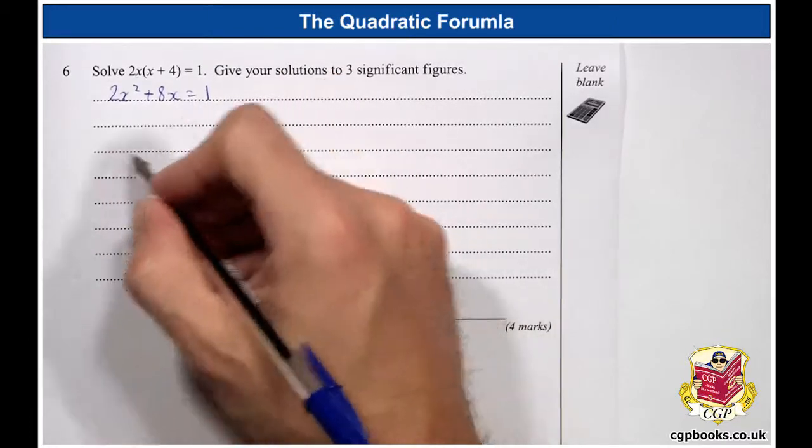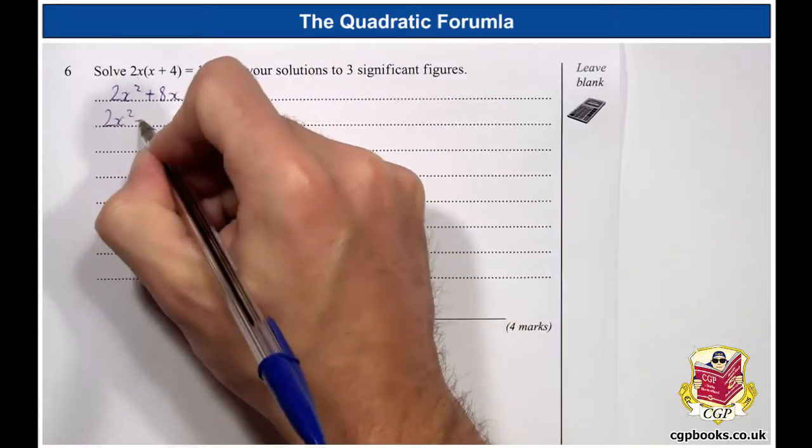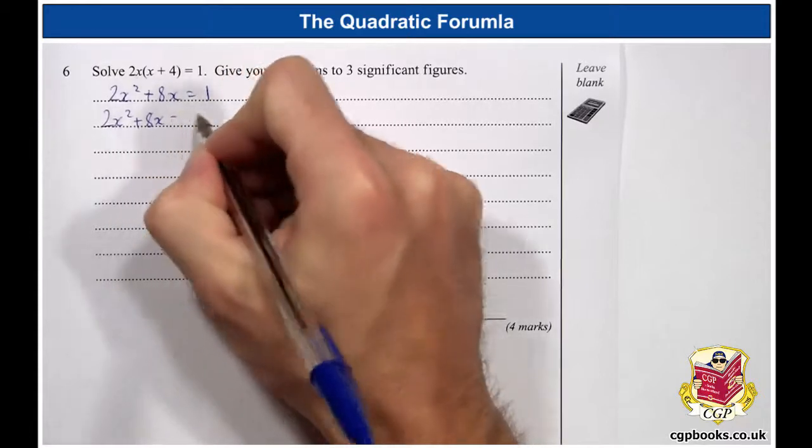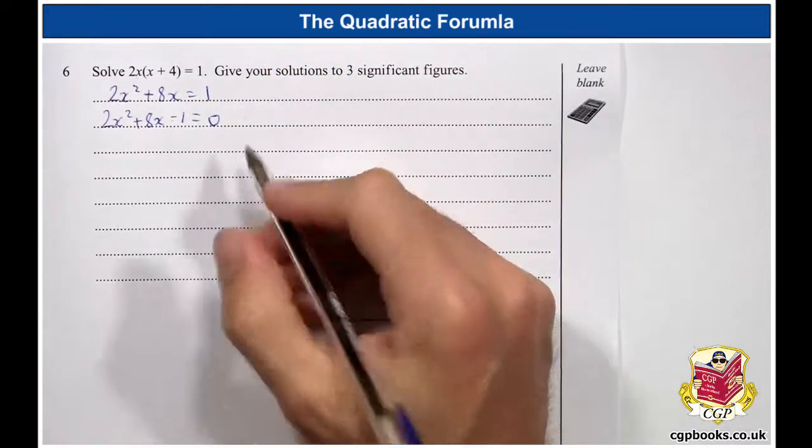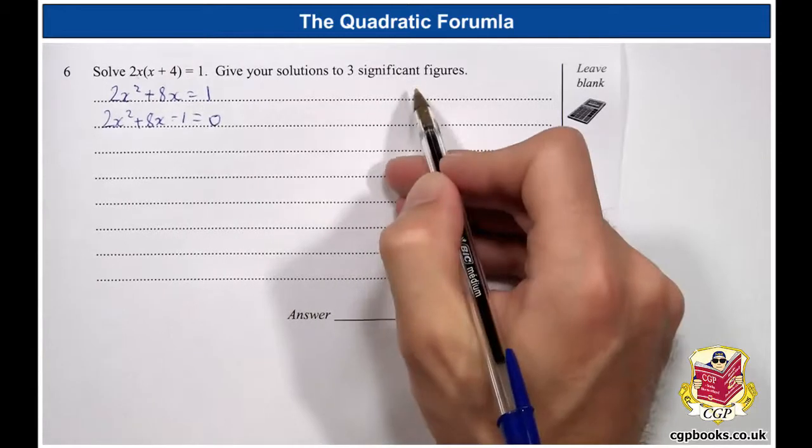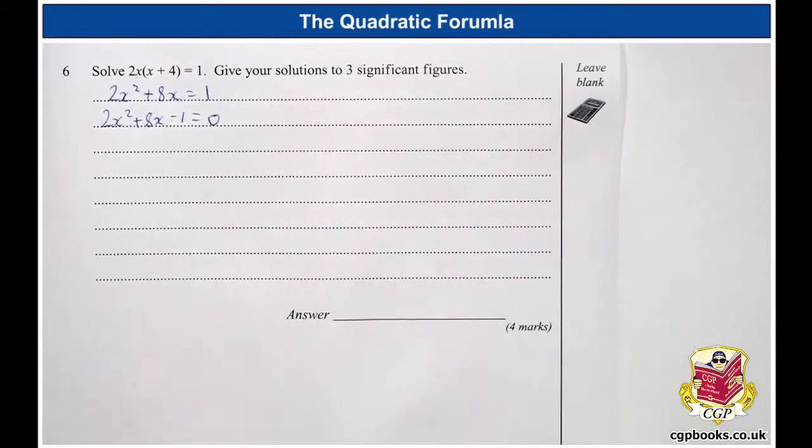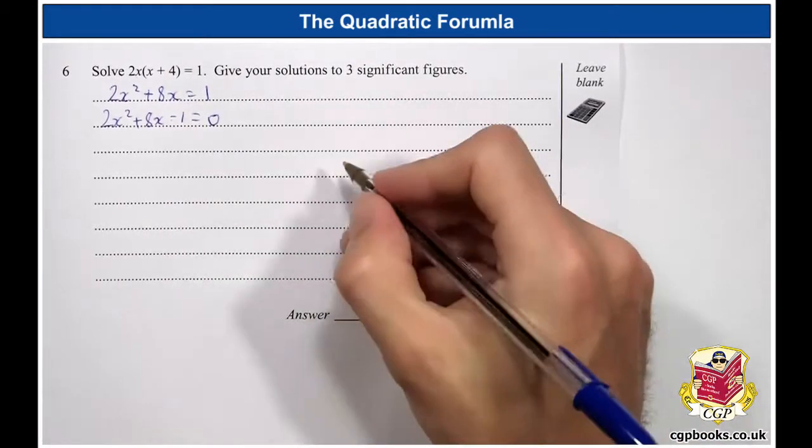Now we want to get it equal to 0, so we take one from both sides, and then it'll be in our standard format. Minus 1 equals 0. Now it says give your solutions to three significant figures, so that means our solutions aren't whole numbers. So, we're going to have to use the formula.